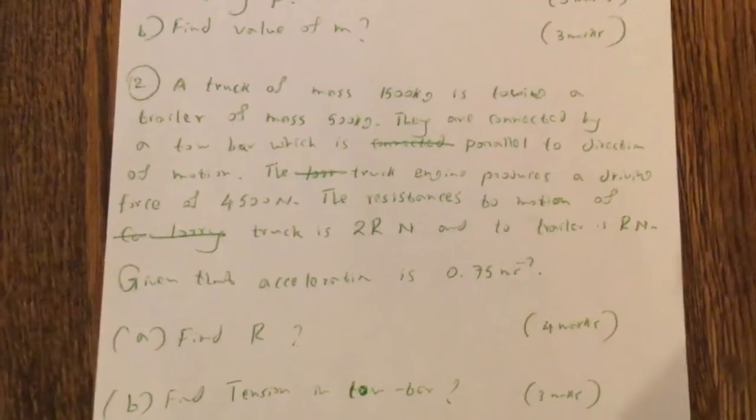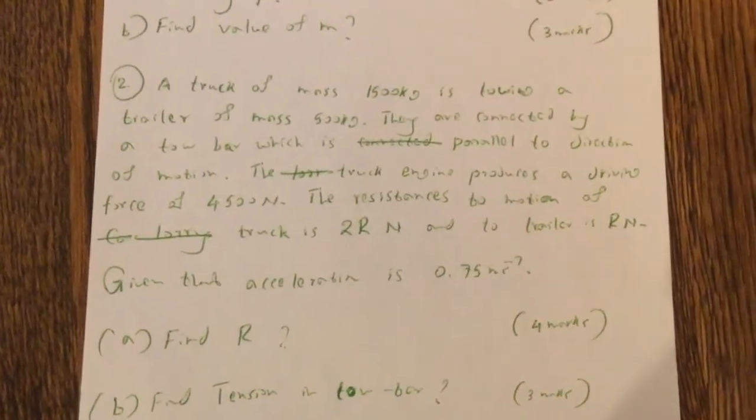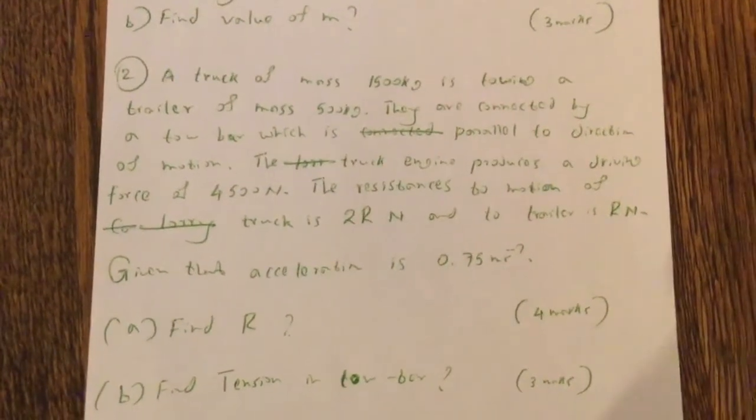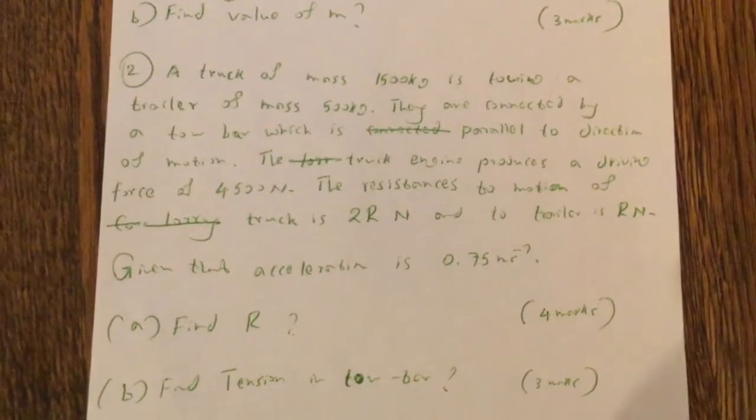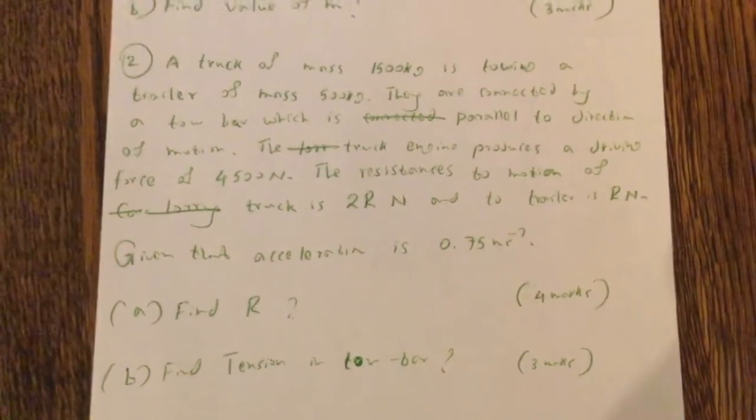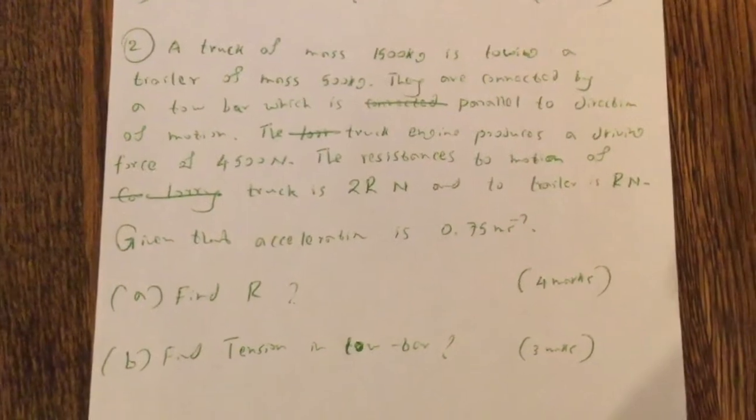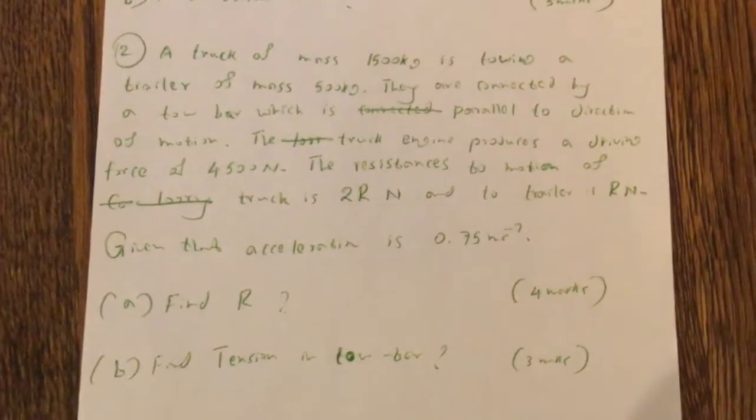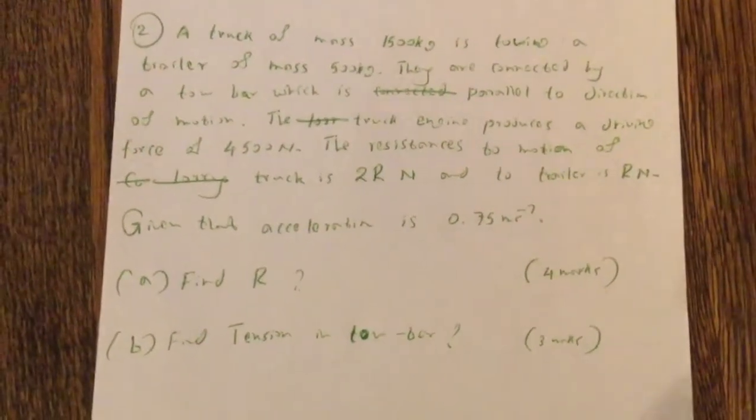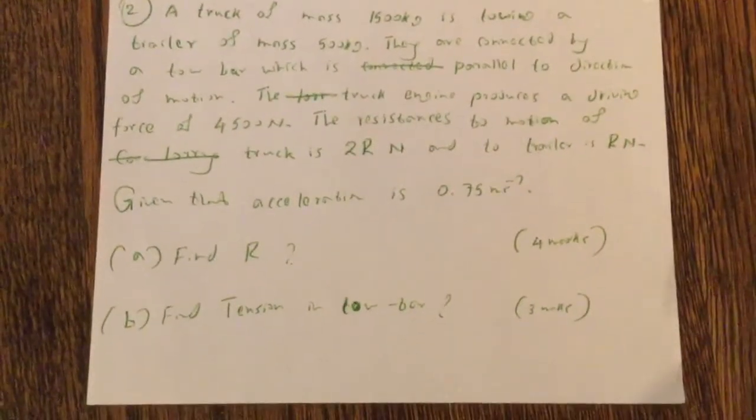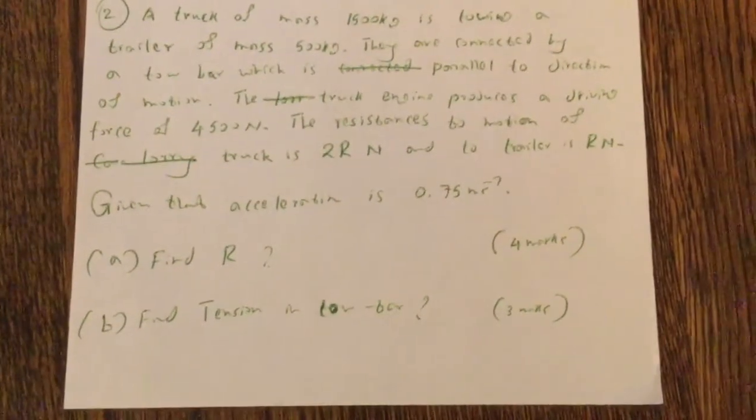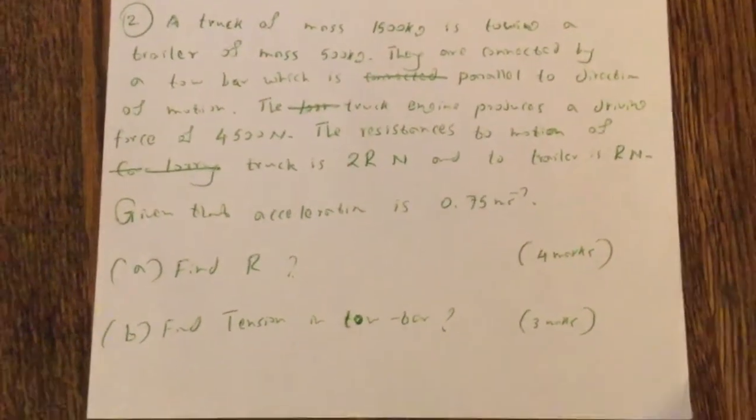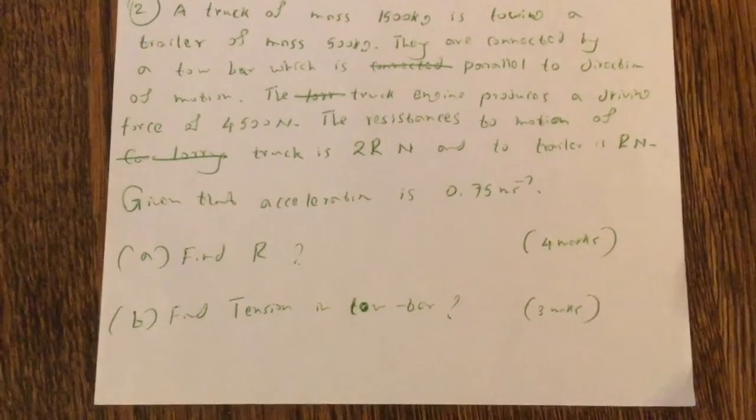Question 2. A truck of mass 1500 kg is towing a trailer of mass 500 kg. They are connected by a tow bar, which is parallel to the direction of motion. The truck engine produces a driving force of 4500 newtons. The resistance to the motion of truck is r newtons and to trailer is r newtons. Given that acceleration is 0.75 m per second squared.